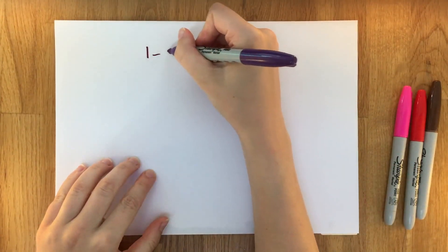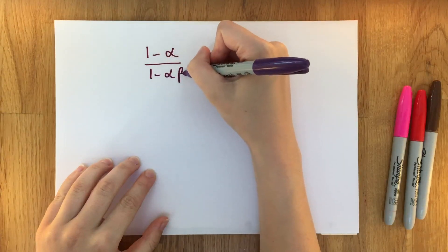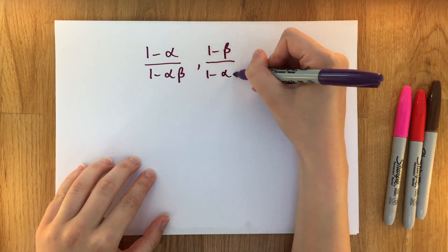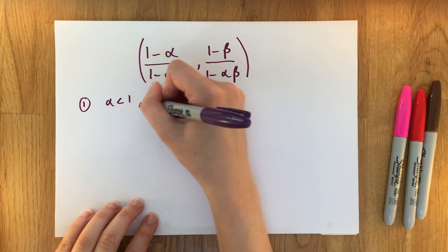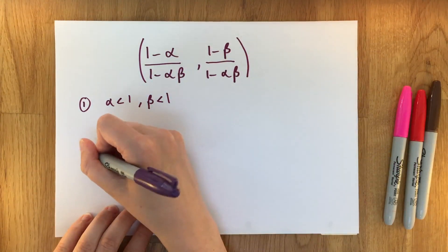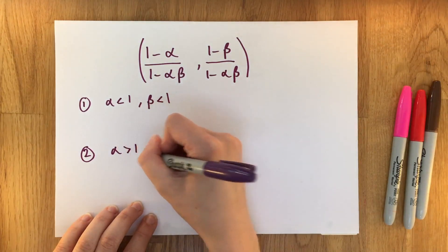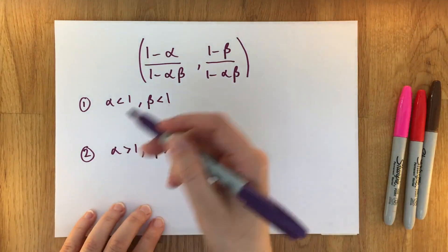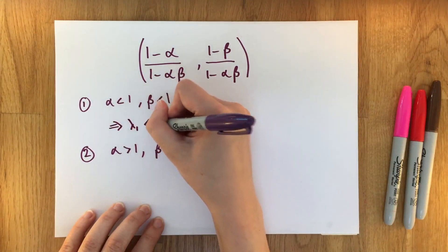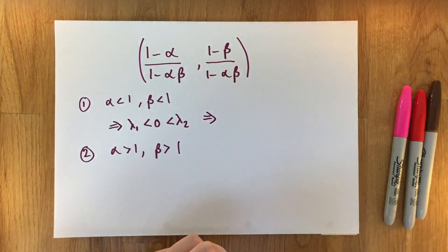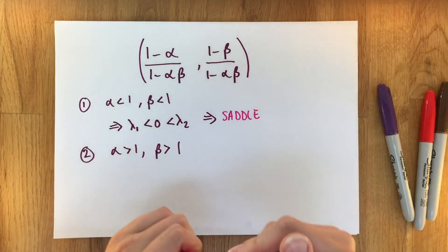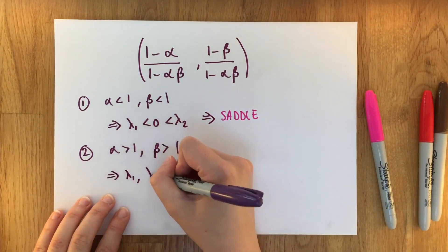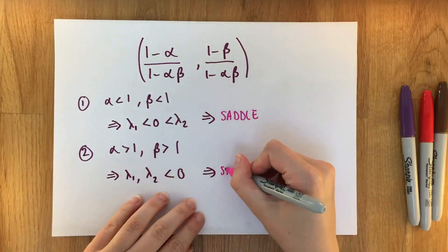Finally, the coexisting steady state at ((1 minus alpha)/(1 minus alpha·beta), (1 minus beta)/(1 minus alpha·beta)). Recall this only exists when alpha < 1 and beta < 1, or when alpha > 1 and beta > 1. Using some more complicated algebra, in the first case (alpha < 1, beta < 1) we get lambda₁ < 0 and lambda₂ > 0 — a saddle point. In the second case (alpha > 1, beta > 1) we get lambda₁ < 0 and lambda₂ < 0 — a stable node.